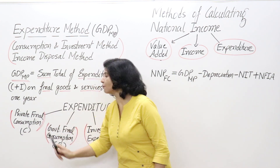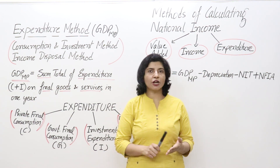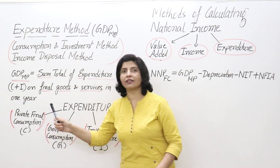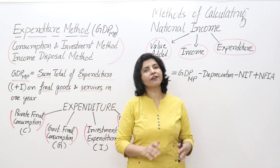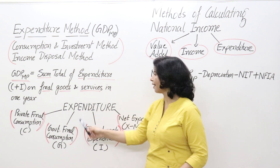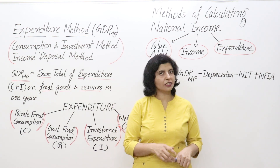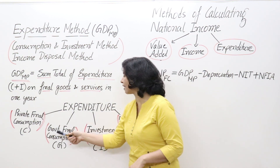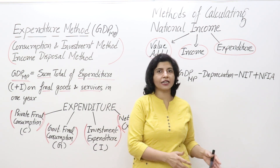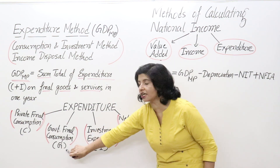Expenditure includes: Private Final Consumption Expenditure — household spending on durable goods, semi-durable goods, non-durable goods, and services such as beds, butter, LPG, cars, scooters, radios, and eatables. Then Government Final Consumption Expenditure — the government buys goods and services for defense personnel and provides subsidized rations through Public Distribution Shops (PDS). Government spending is denoted by G.